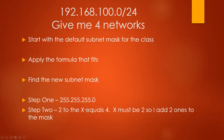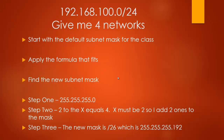They're asking for four networks, so I use 2 to the x equals 4. X must be 2 because 2 to the 2 gives me 4. And 2 is the number of ones I have to add to the default subnet mask. So if the default is /24 and I add two ones, the new subnet mask is /26. Converting that out: three 255s account for 24 ones, and two ones left gives 192. So the new subnet mask is 255.255.255.192.